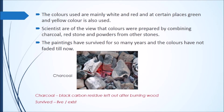From where did they get these colors? According to scientists, they believe that colors were prepared by combining charcoal, red stone, and powders from other stones. Charcoal means black carbon residue left after burning wood or animal bones. The paintings have survived for so many years and the colors have not faded till now — which is really surprising!